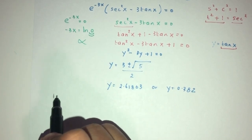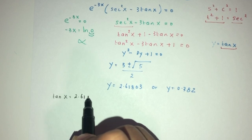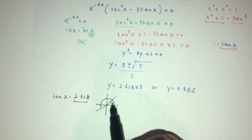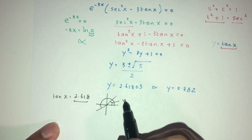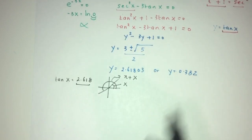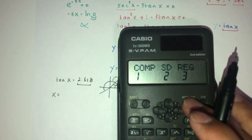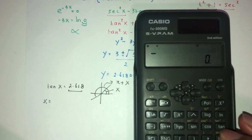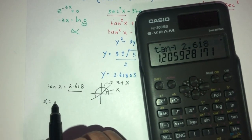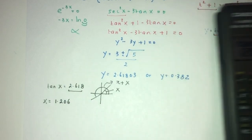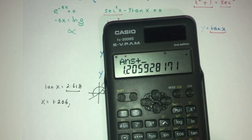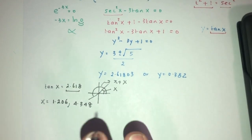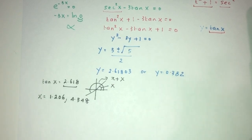So now we have these two values for y, and we put tan x back. On one side, tan x equals 2.618 — this is positive, so it will be in the first quadrant and the third quadrant. The first quadrant value is x directly, and the third quadrant is pi plus x. So x equals tan inverse of 2.618, which is 1.206. And adding pi gives 4.348. Let's write everything down, and in the end we can simplify and see what values we can use.